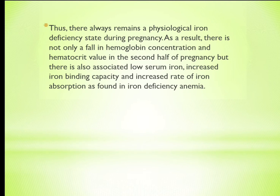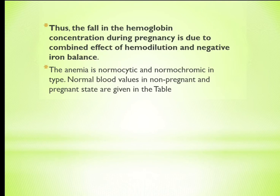As a result, there is not only a fall in hemoglobin concentration and hematocrit value in the second half of pregnancy, but there is also associated low serum iron, increased iron binding capacity, and increased rate of iron absorption as found in iron deficiency anemia. Thus, the fall in hemoglobin concentration during pregnancy is due to the combined effect of hemodilution and negative iron balance. The anemia is normocytic and normochromic in type.